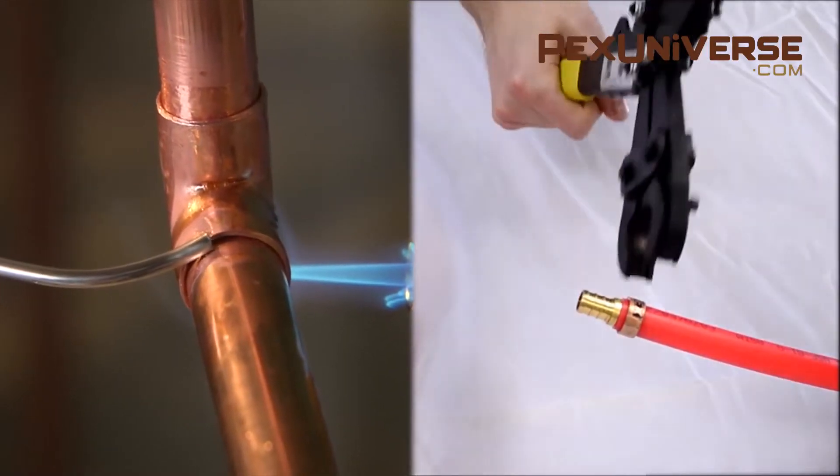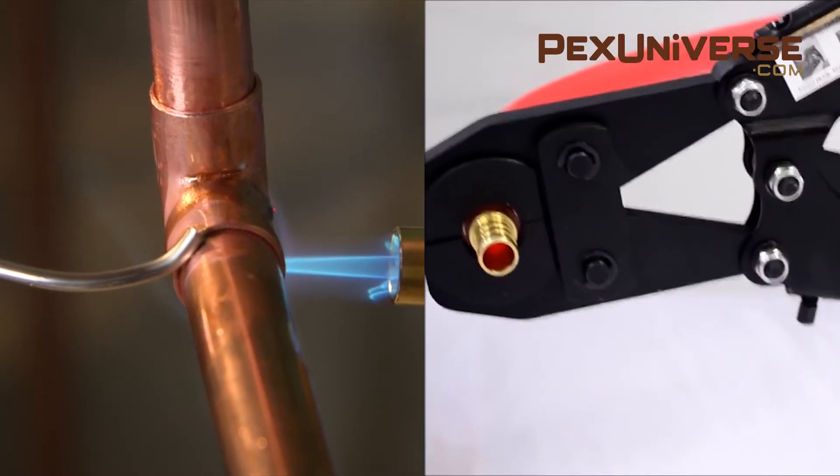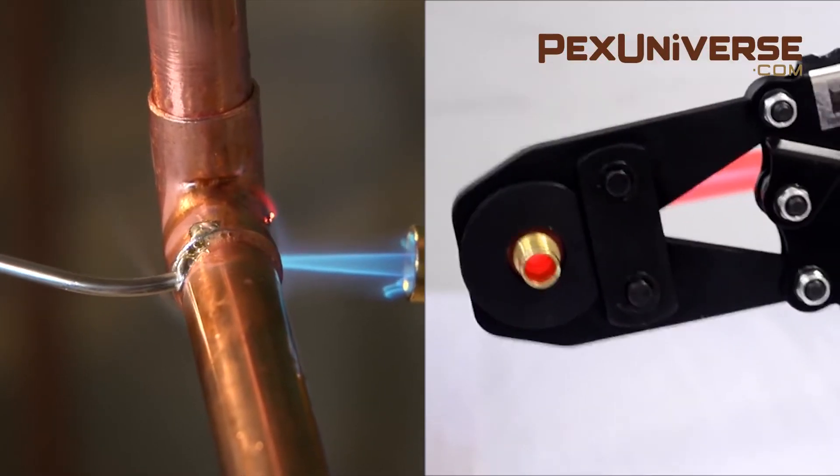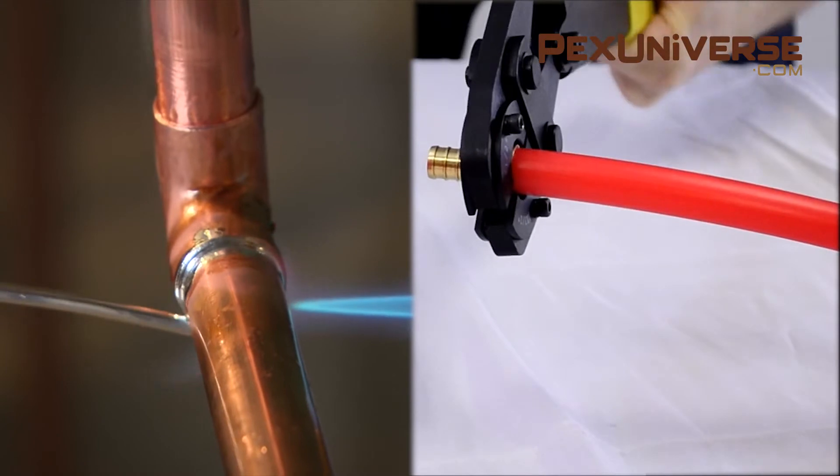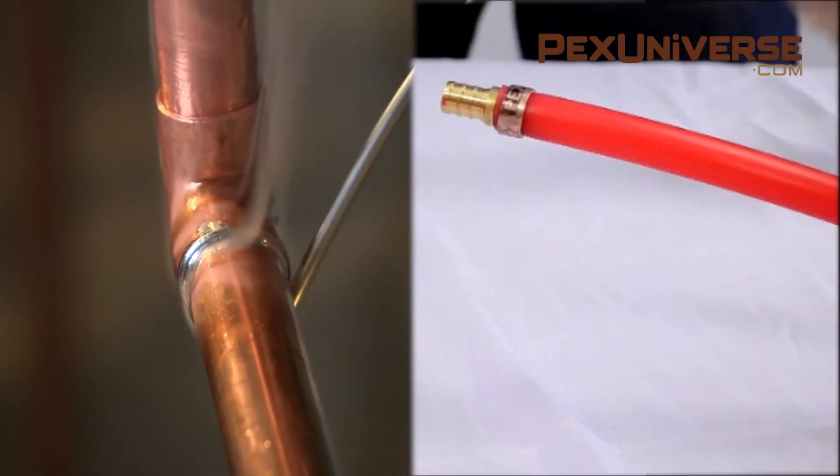Copper requires soldering to connect it to fittings which is more dangerous, takes longer and requires more expensive supplies. PEX tubing on the other hand is joined with an easy crimp system which is faster and requires fewer fittings.